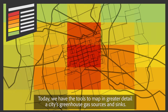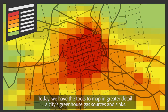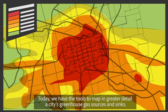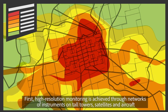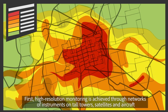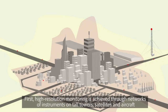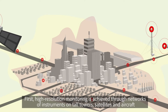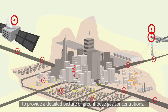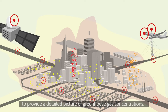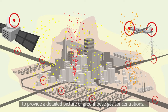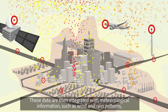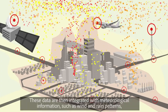Today we have the tools to map in greater detail a city's greenhouse gas sources and sinks. First, high-resolution monitoring is achieved through networks of instruments on tall towers, satellites and aircraft to provide a detailed picture of greenhouse gas concentrations.